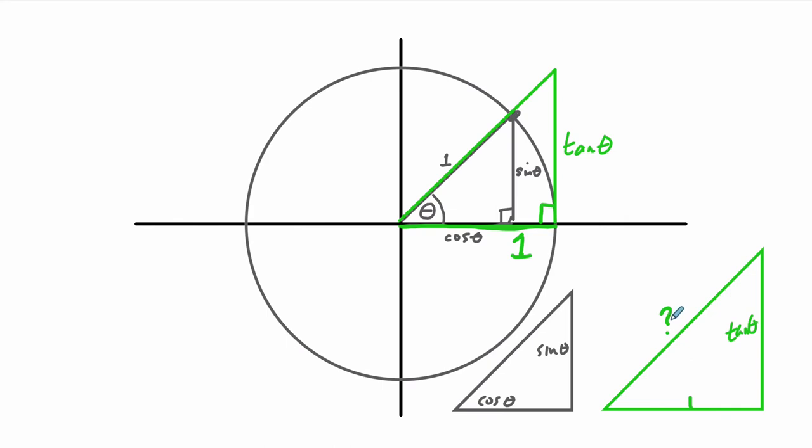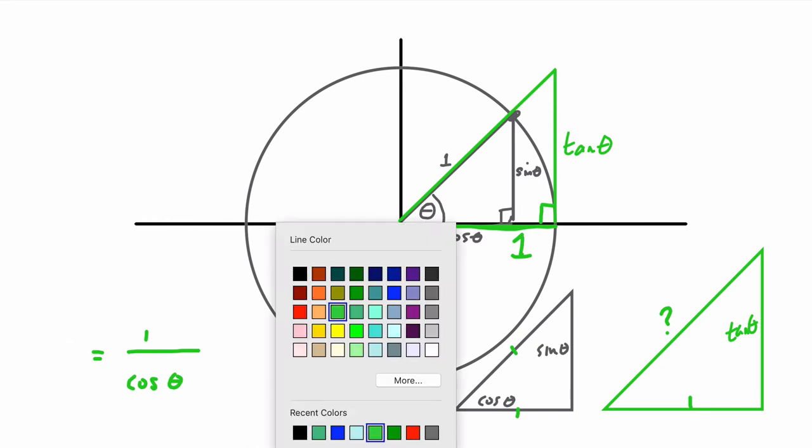So this side, the ratio of this side, the hypotenuse, to 1 would have to be equivalent to the ratio of this hypotenuse, which is 1, right? It's the radius of the circle, to this side, which is the cosine. So it equals 1 over the cosine of theta. Now, divide it by 1, it doesn't really affect your outcome. It's just the numerator, essentially, of course.